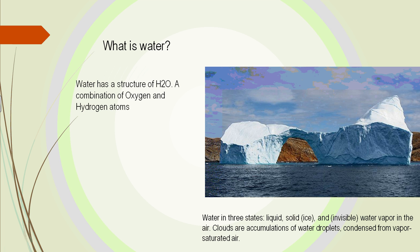Water has that chemical structure of one oxygen with two hydrogens in a Y-shaped form. It can be seen in three different states here on Earth. We've got the solid, which is ice — an iceberg floating right here. We've got the liquid, the ocean that it is floating in, and the invisible water vapor that goes up into the clouds.